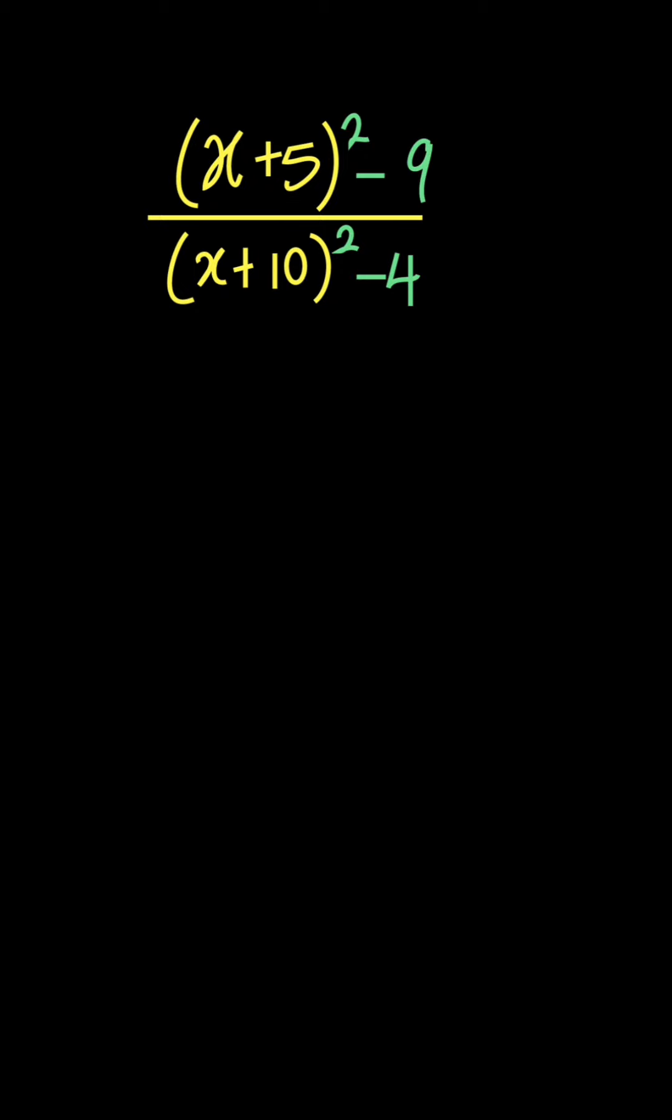So the best thing to do here is to understand that this is a difference of two squares, which you can call (x+5)² minus 9 is 3² over (x+10)² minus 4 is 2².